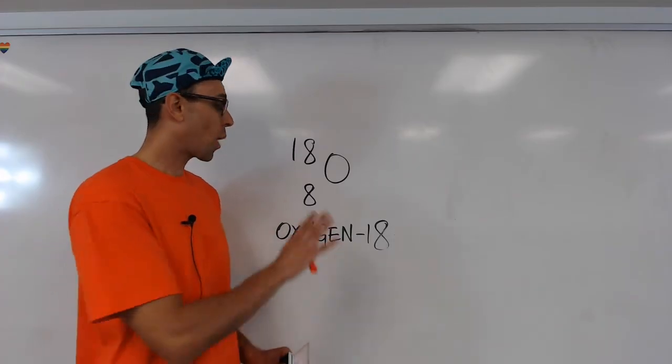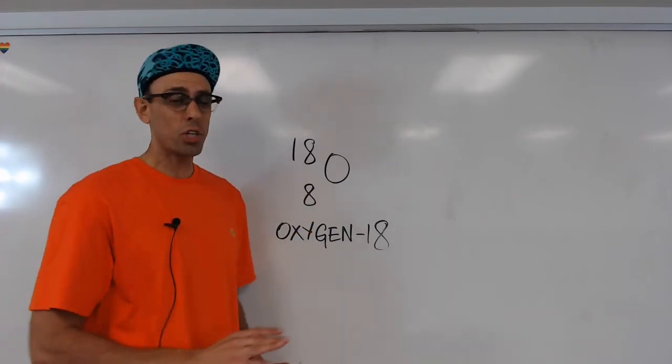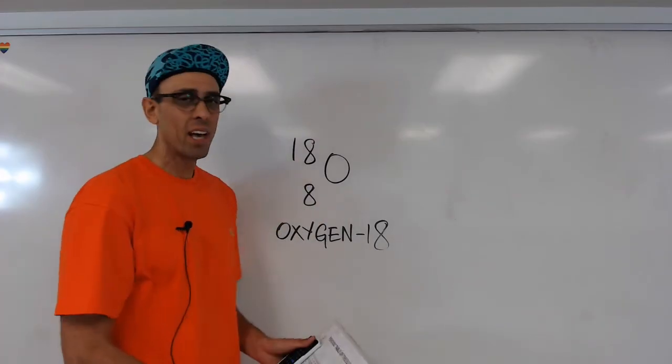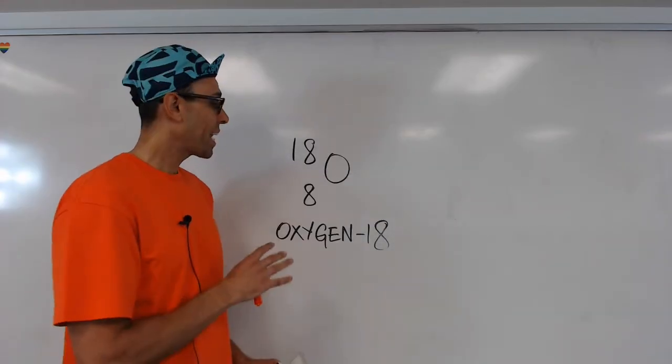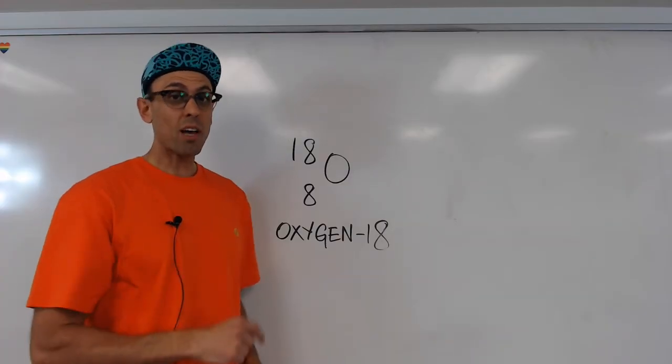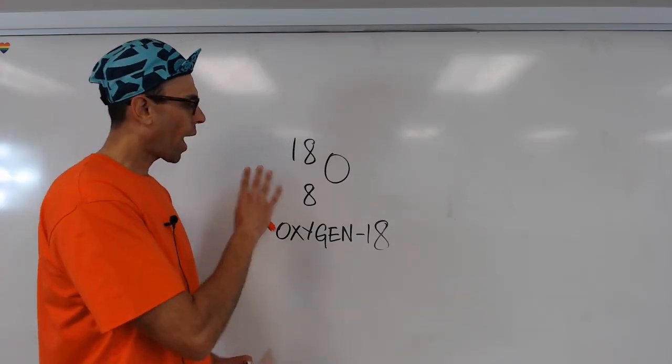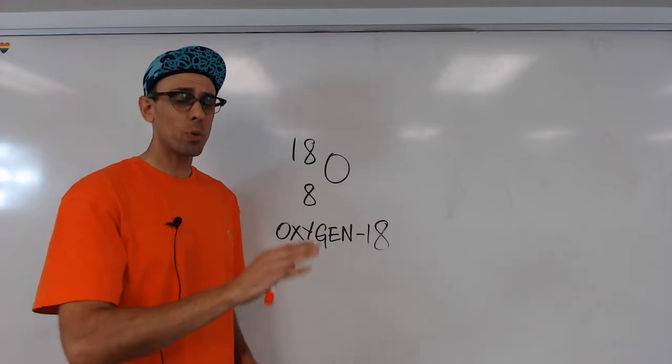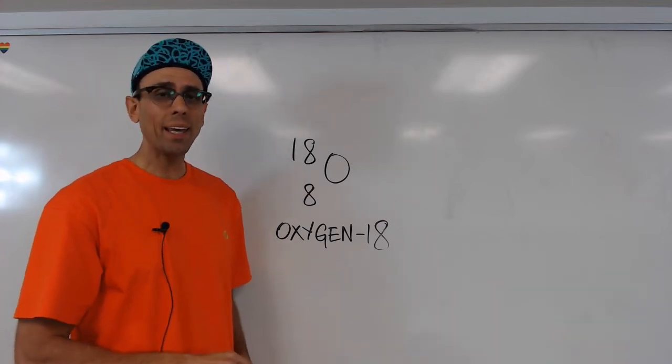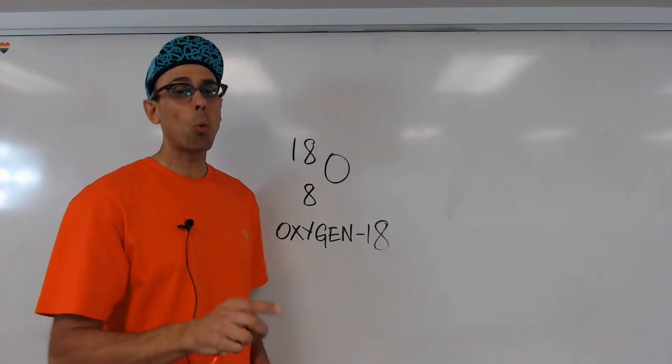Now if we wanted to know how many protons oxygen-18 has, if we weren't given this, we could always use our periodic table and look up the atomic number there. Now what I need to do is first evaluate, how big is this nucleus? We know that if it's a smaller nucleus with an atomic number between 1 and 20, the ratio should be about 1 to 1 for stability.